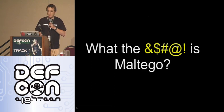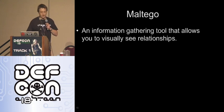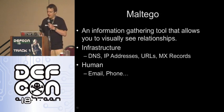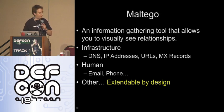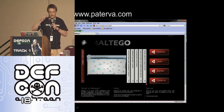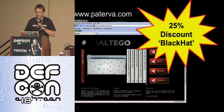So what's Maltego? Maltego is an information gathering tool that allows you to visually see relationships — typically infrastructure like DNS names, web servers, IP addresses, and also human information like email addresses and phone numbers. The really cool bit is it's extendable by design. If you haven't got something in there by default, you can add what are called local transforms. You go to the Paterva.com site — this is written by Roelof Temmingh and Andy McPherson, who were originally with SensePost and left to create the company.